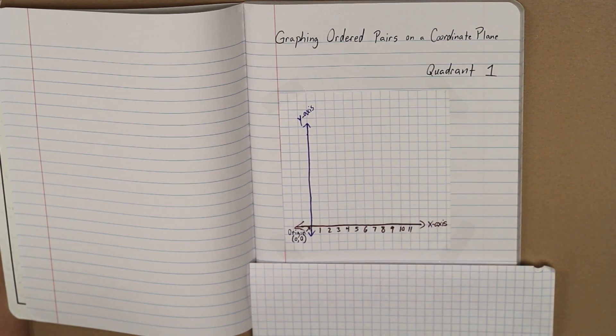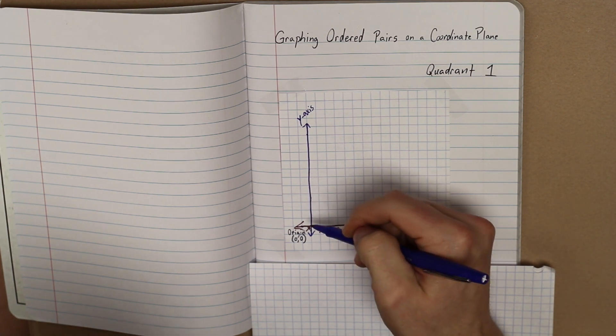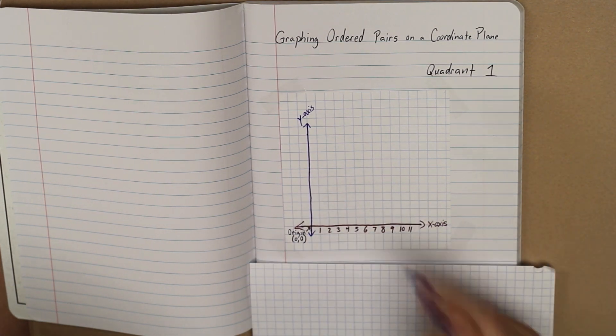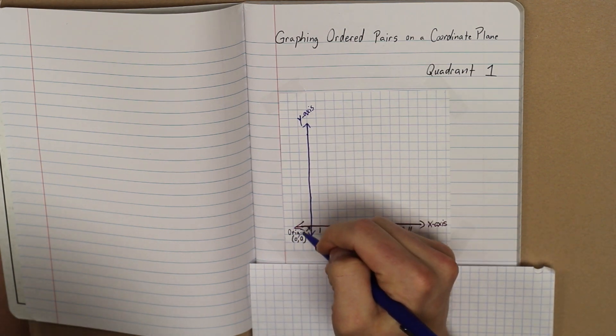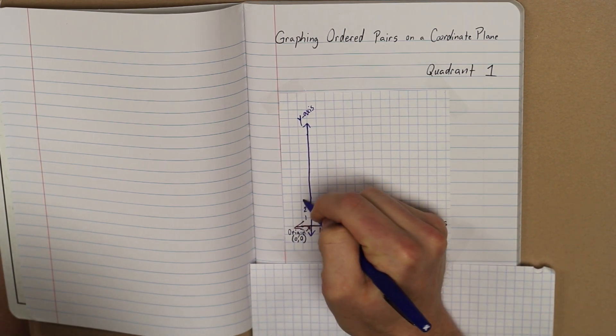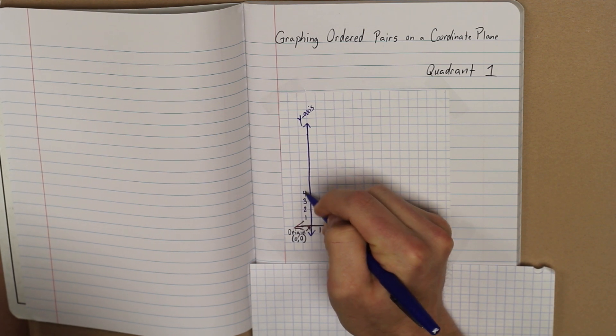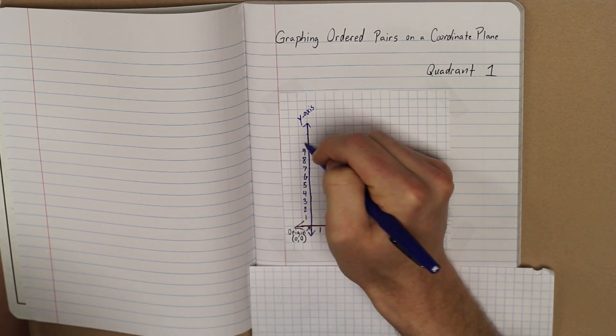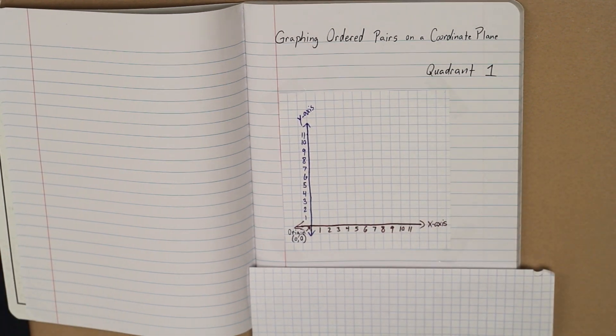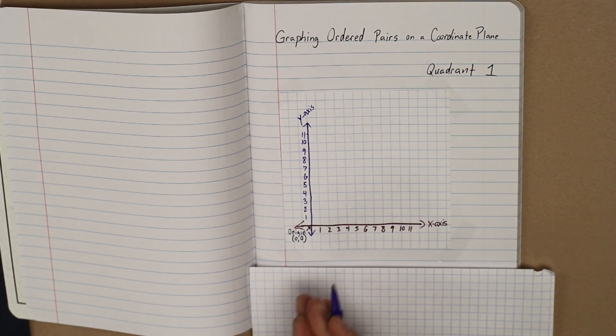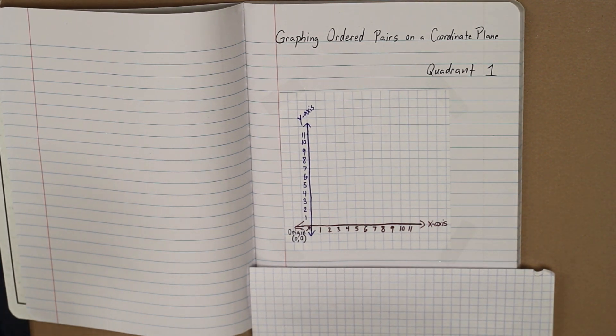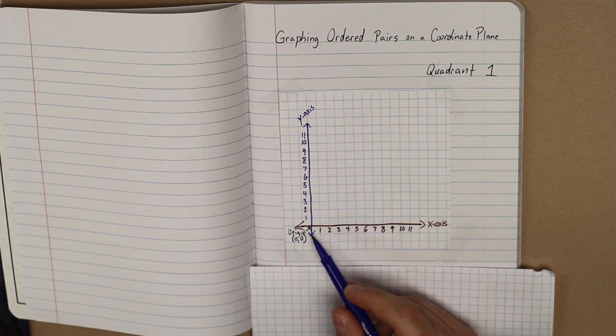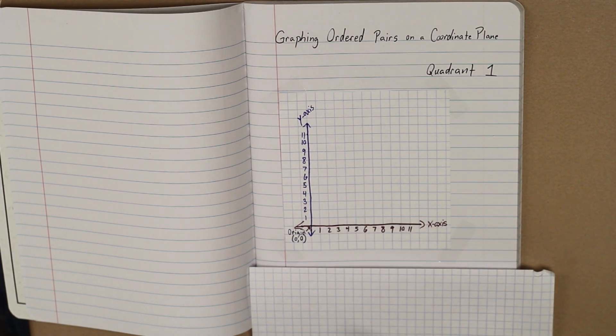We can do the same thing with our y-axis. If we go below the x-axis, it will be negative, but we aren't worried about that. If we go above, starting with the origin, we're going to count up: 1, 2, 3, 4, 5, 6, 7, 8, 9, 10, 11. Like all other number lines, they may not be specifically like this with whole numbers. You may see decimals, you may see fractions. But it's still the same. It starts with our origin and goes out in all directions from that.